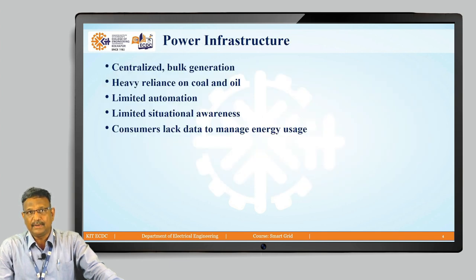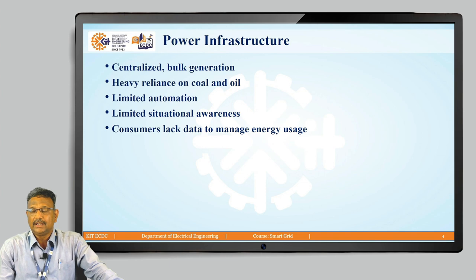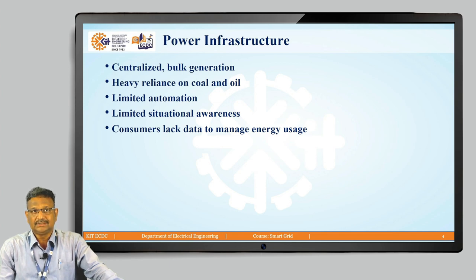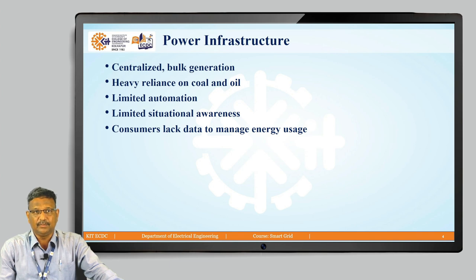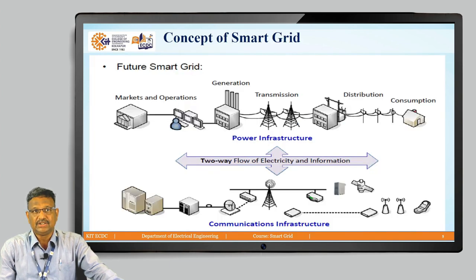What does the traditional power infrastructure comprise? It is centralized bulk generation with heavy reliance on coal and oil, and there was limited automation. Even the status of electricity availability was uncertain, resulting in limited situational awareness of the power system, and it was also not possible to manage energy usage.